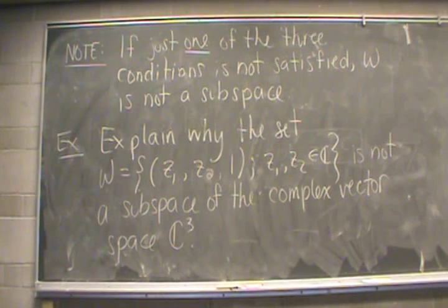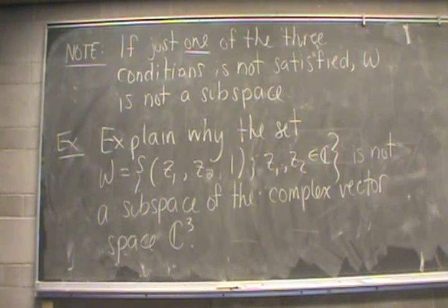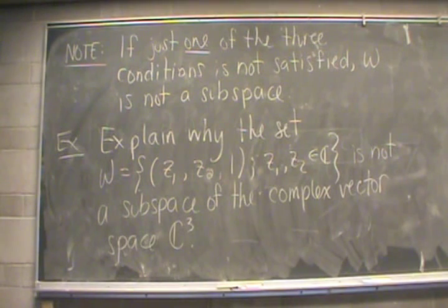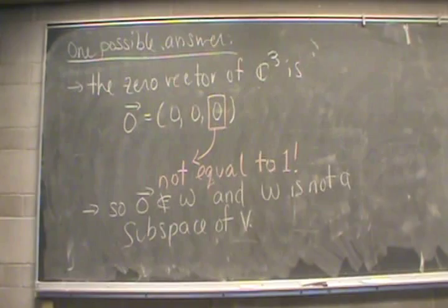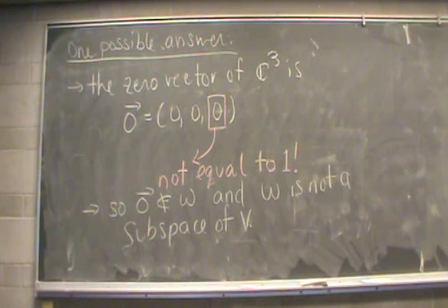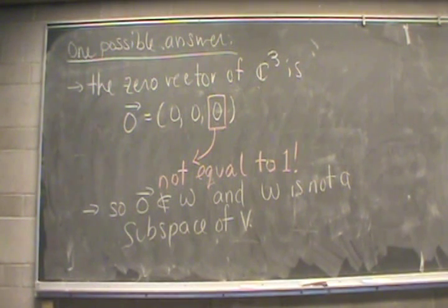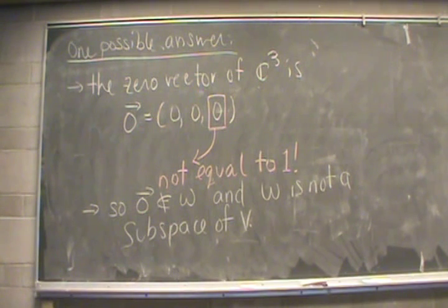Next, an example showing where the subspace test might fail. Consider the set W of vectors in C3 where the first two components are complex numbers and the last component is always equal to one. The zero vector of C3 has three zeros — the last component is not equal to one, so the zero vector is not inside W. Since we proved that the zero vector must be in every subspace, W cannot be a subspace of V.